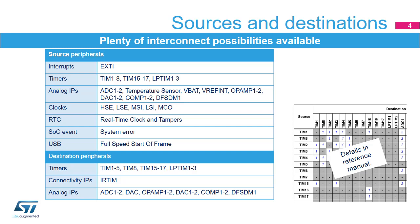The main peripherals having direct autonomous interconnections are timers, analog IPs, clocks, extended interrupt and event controller, digital filters for sigma-delta modulators, USB, and system error for the connection sources, and timers, analog IPs, digital filters for sigma-delta modulators, and direct memory access controllers for the connection destinations.